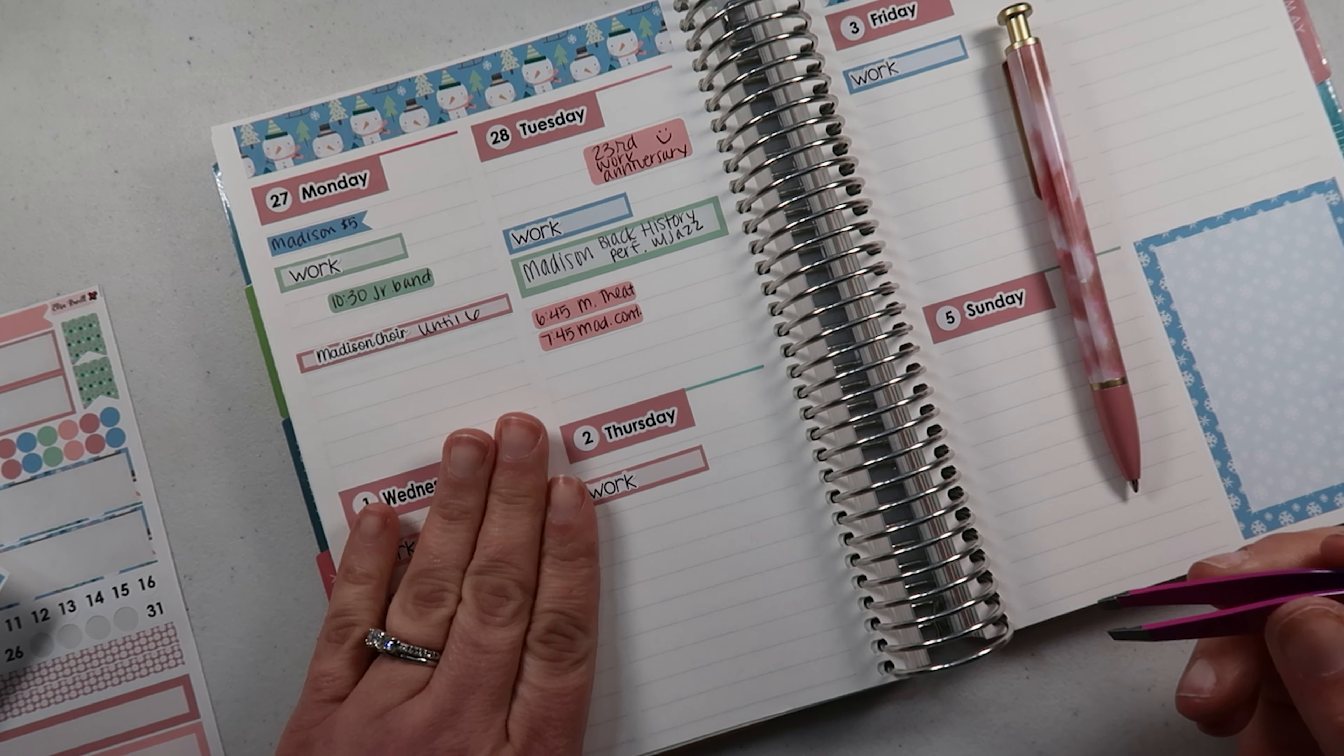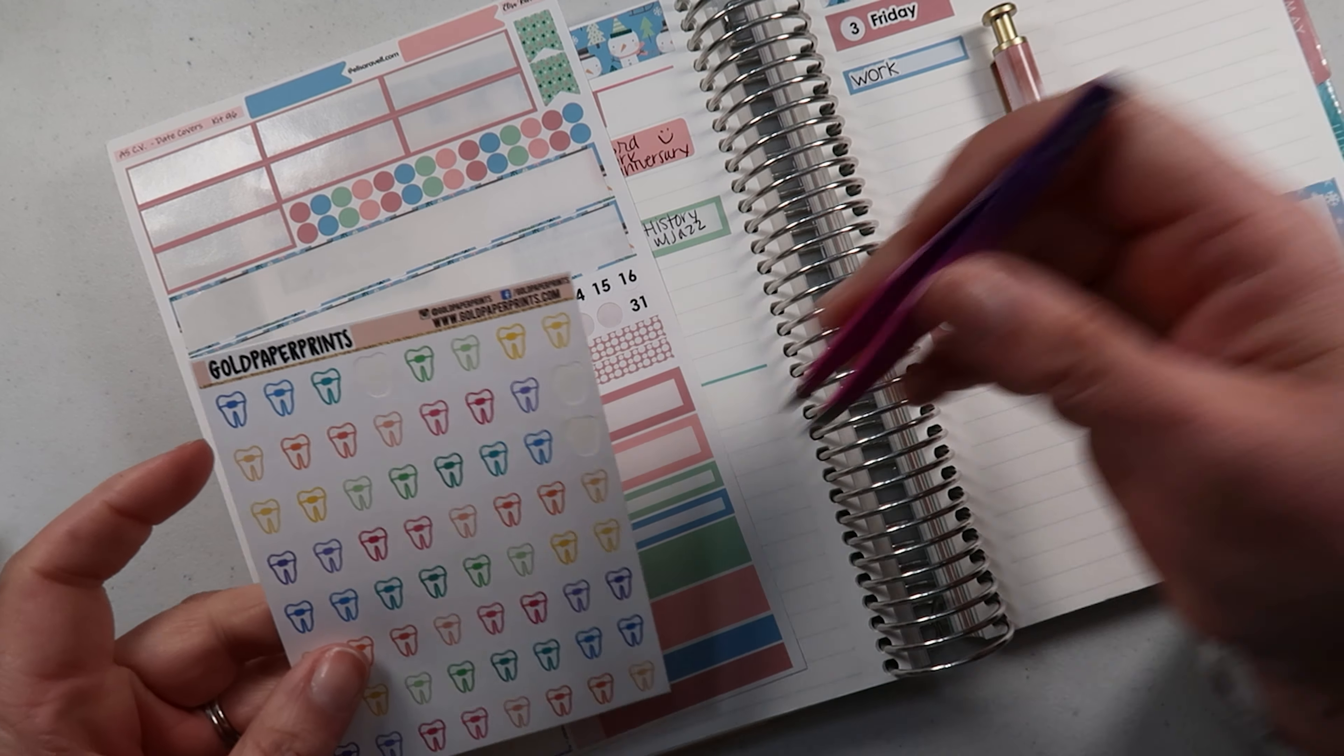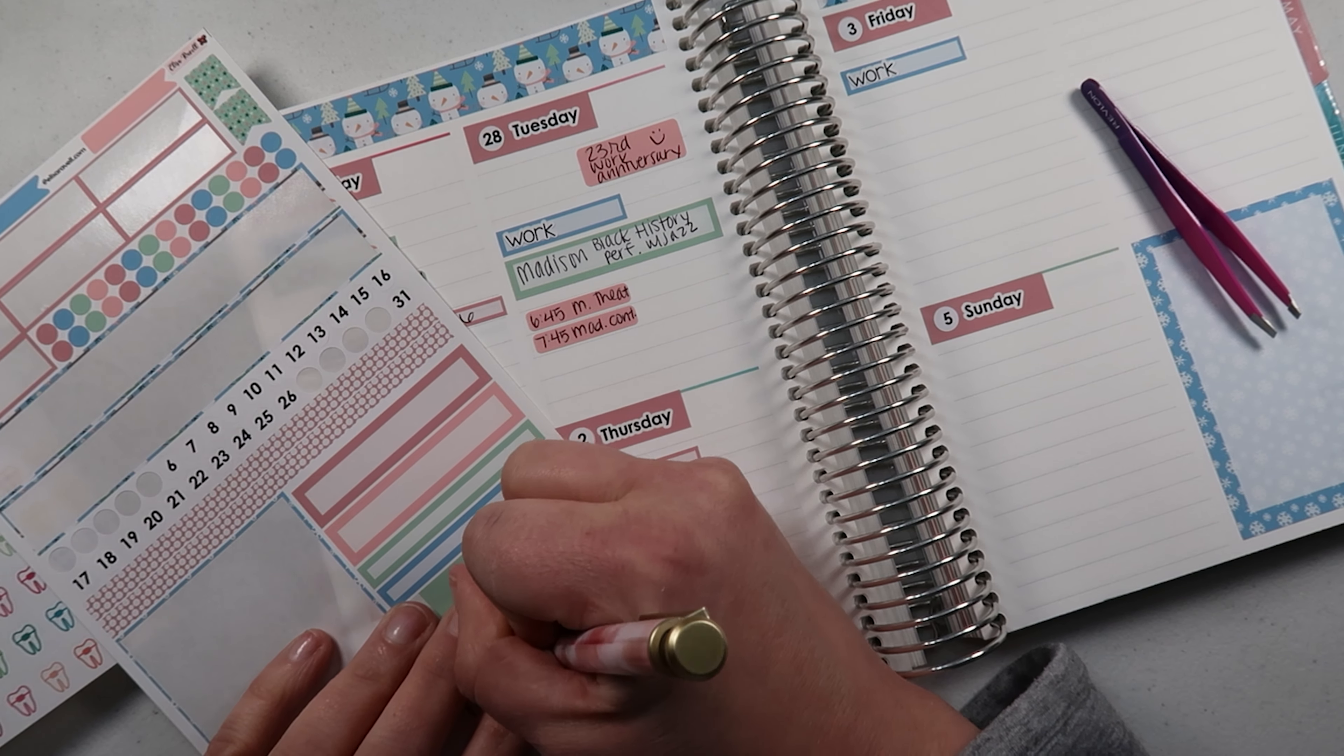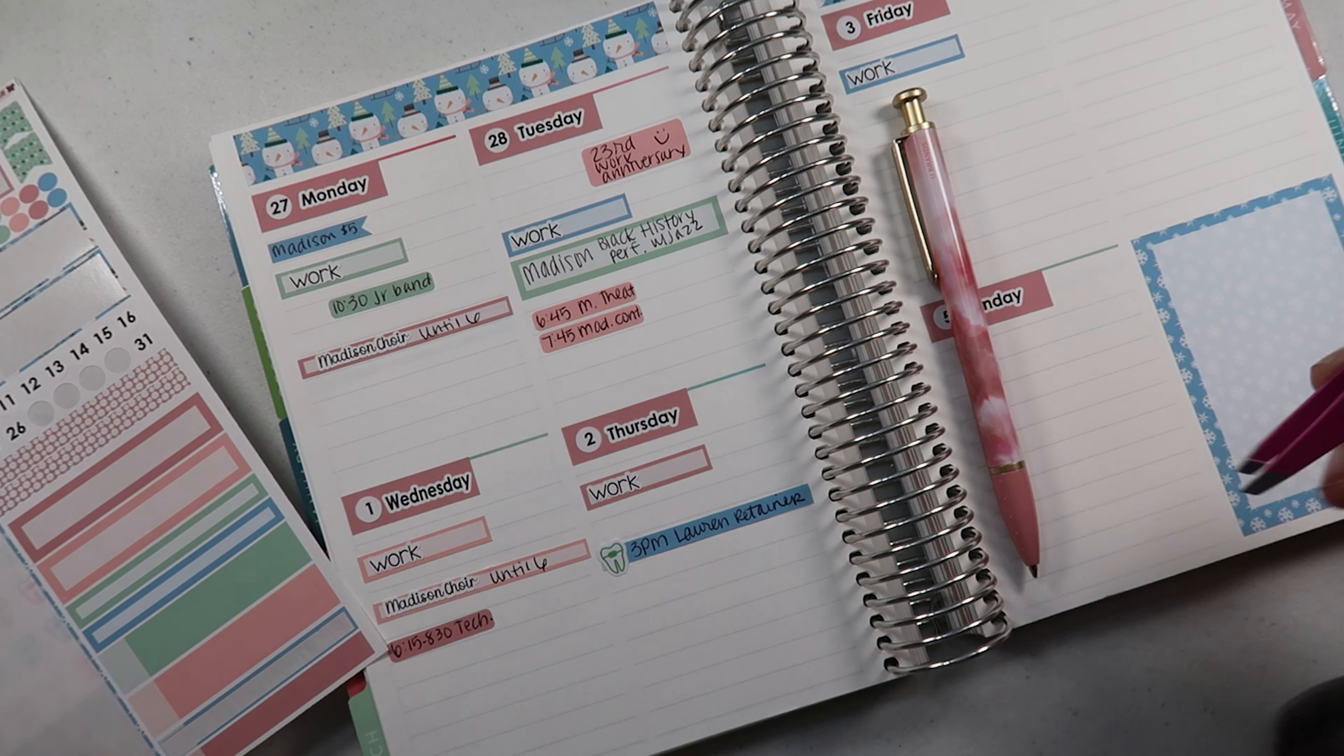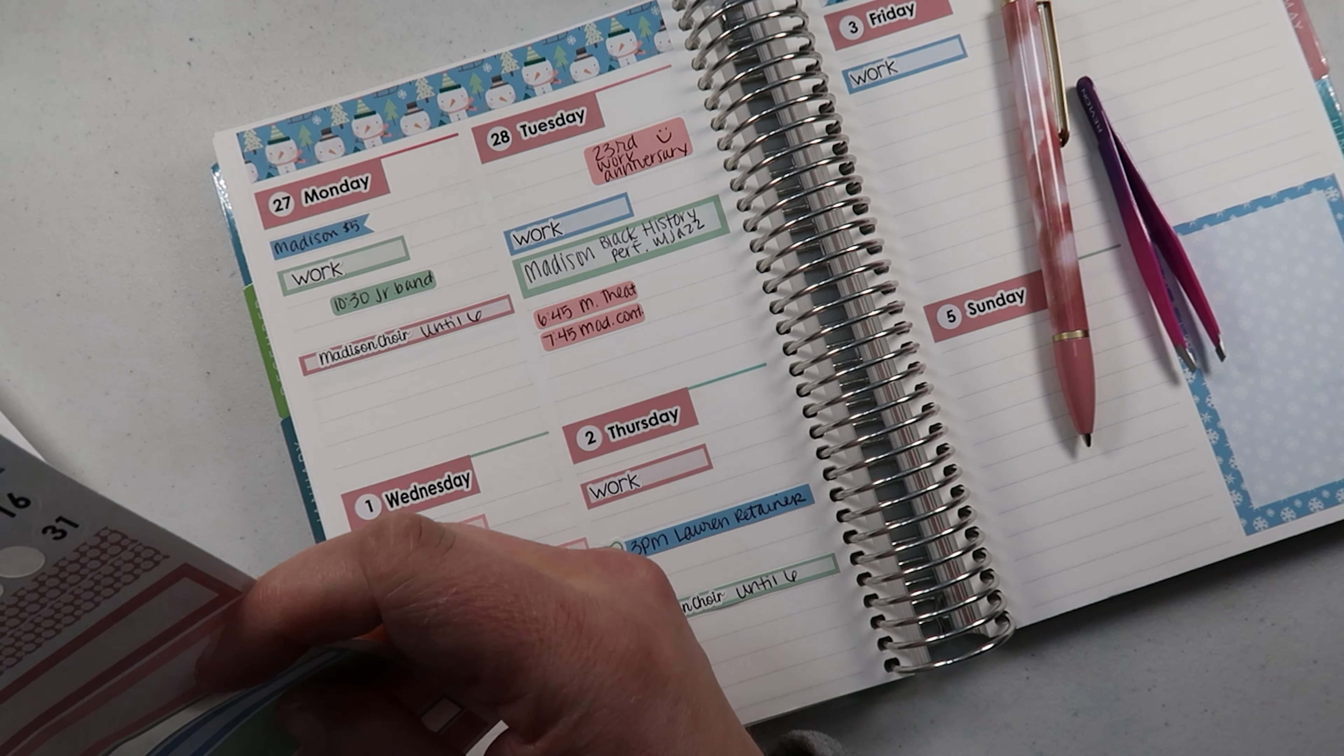And then this day, Lauren has an appointment for her retainer, so I'm gonna put one of these little braces guys, even though it's not technically like a braces appointment, but these are kind of like little braces or things. So 3 p.m., Lauren retainer appointment. So they're gonna make sure that her permanent retainer is doing good. That's at 3 p.m., and then Madison has choir again. Put it on there, and that's until 6.